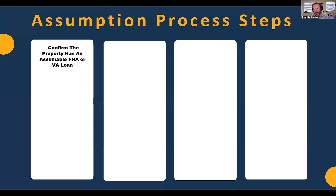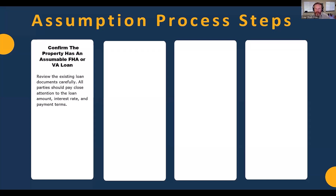Whether you're representing a buyer or a seller, the first thing is confirming the property has an assumable FHA or VA loan. When you meet with a seller, gather the loan balance, PITI payment, interest rate, and remaining term. Find out if the loan documents have a VA or FHA case number. You can often pull an O&E report and get a copy of the deed of trust that will show the case number. If it's FHA or VA, it is assumable.